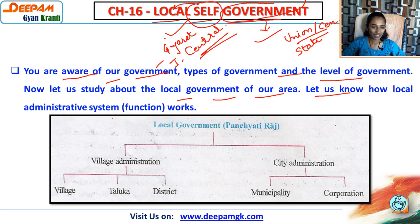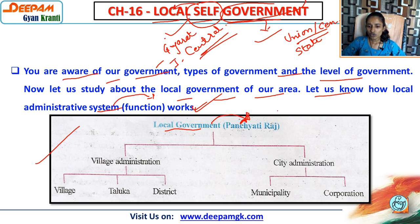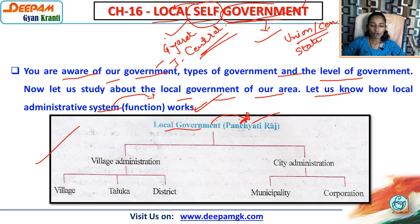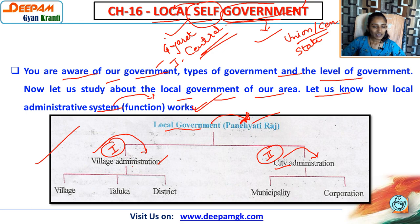Let us know how local administrative functions work. We have to learn about our local administrative system and how they work, which are the functions of the local government. This diagram is very important. Local government is also called Panchayati Raj. If you are living in the village you have heard of gram panchayat. Generally, we can divide local government into two parts: village administration and city administration.